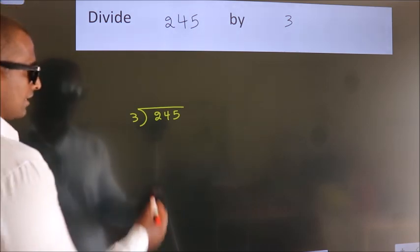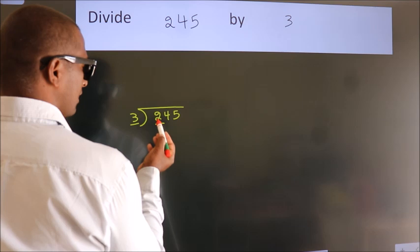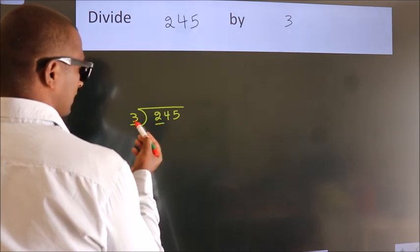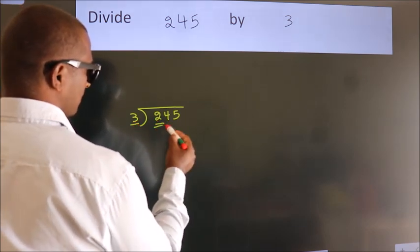Next. Here we have 2. Here 3. 2 is smaller than 3. So we should take 2 numbers. 24.